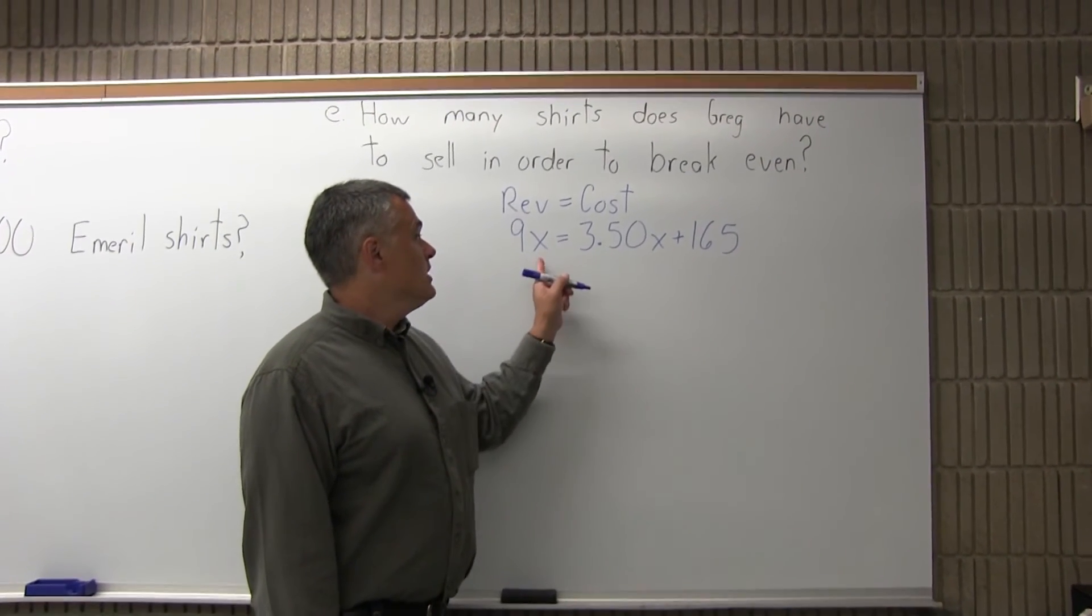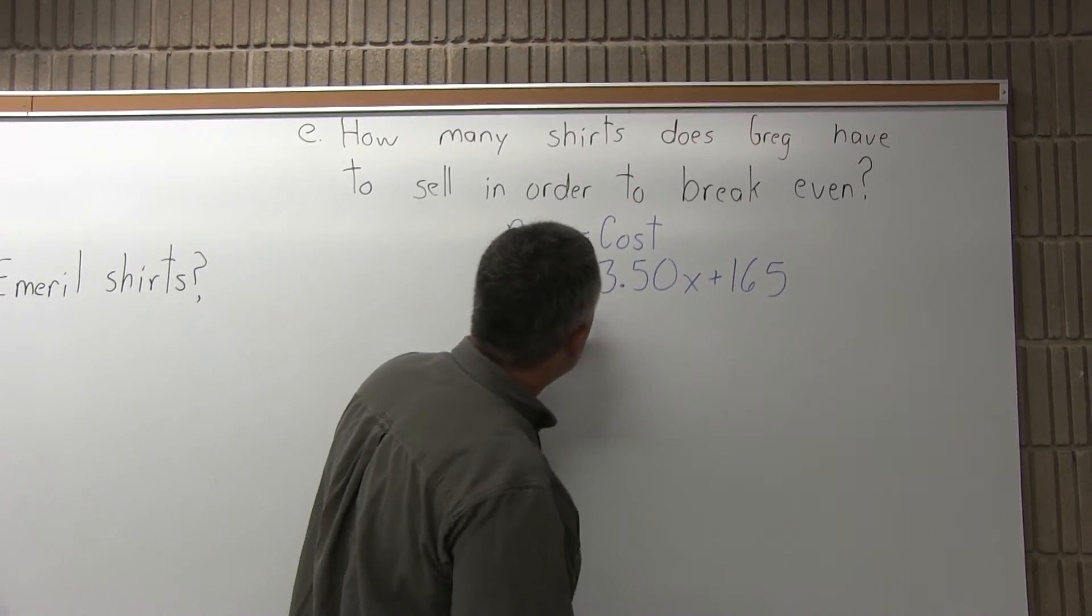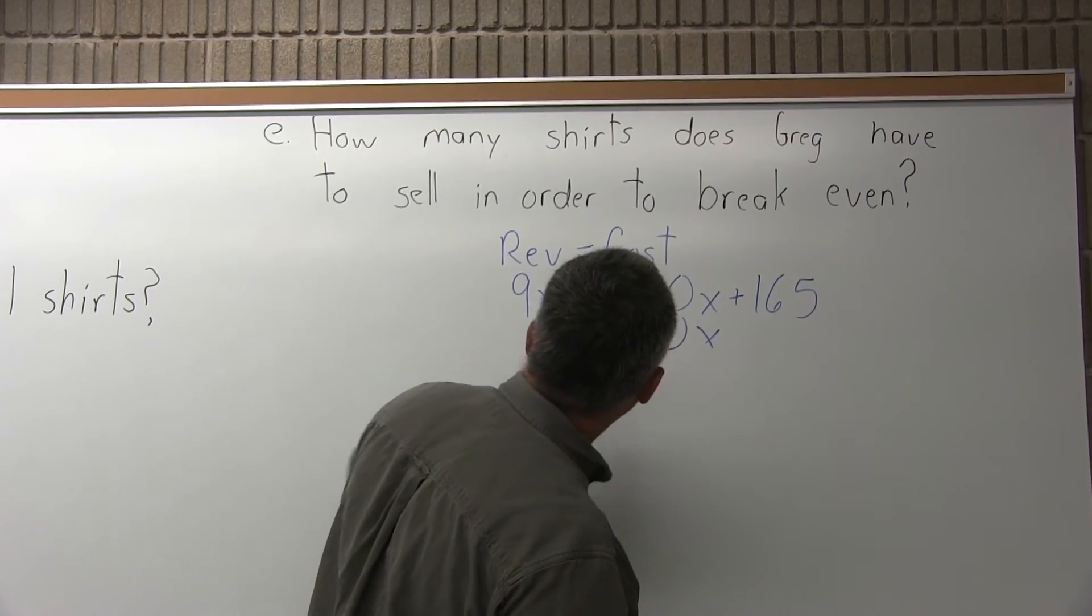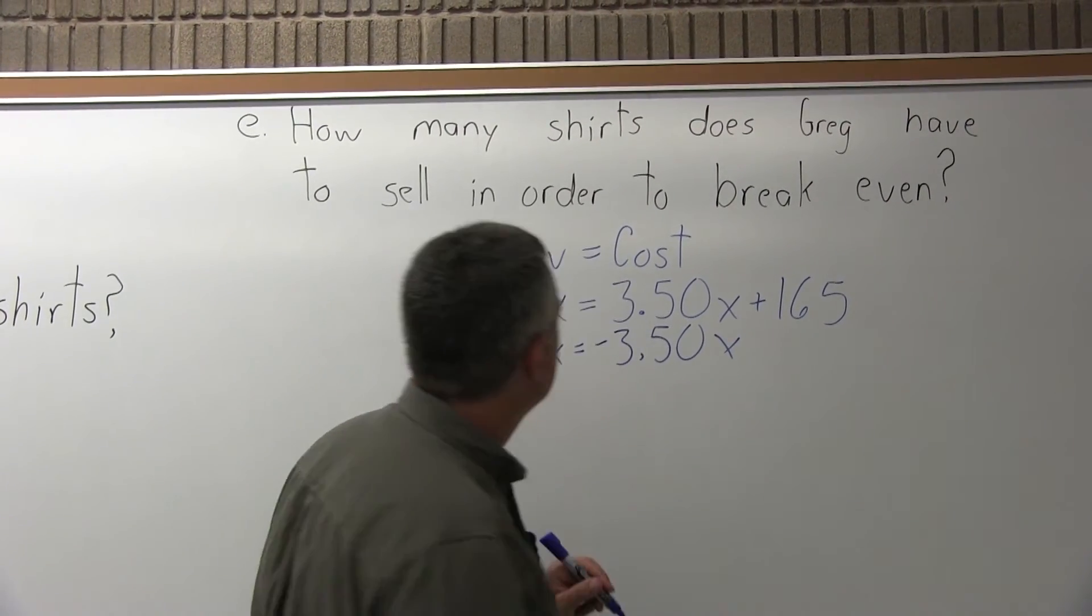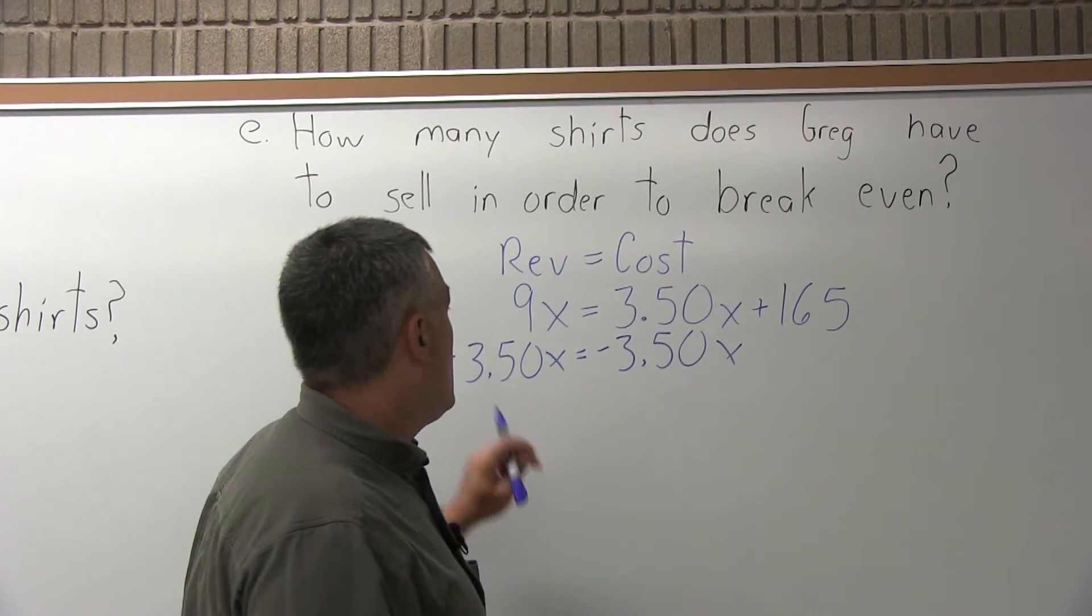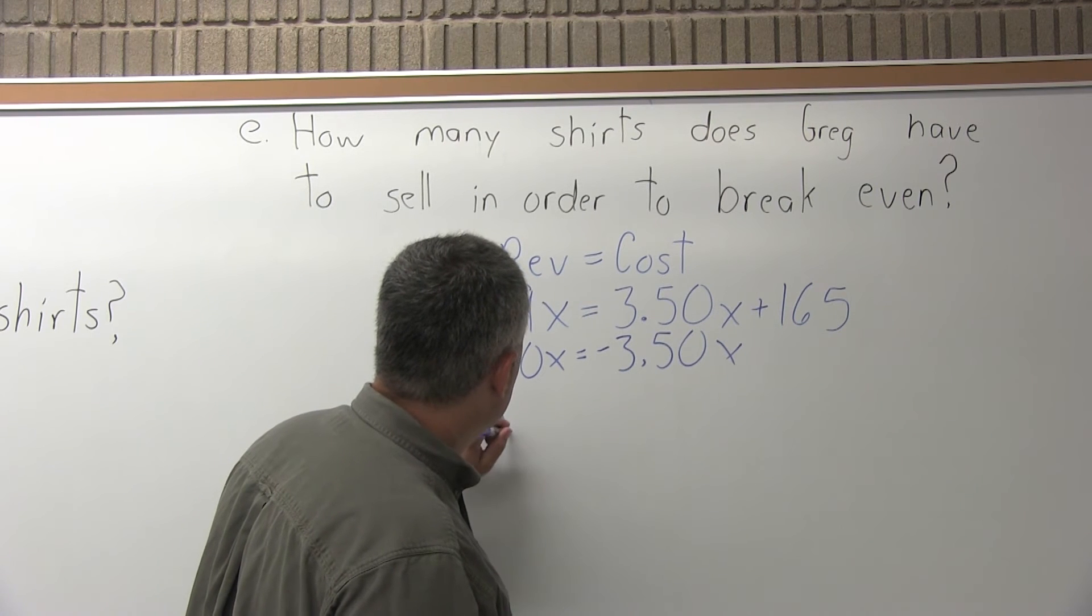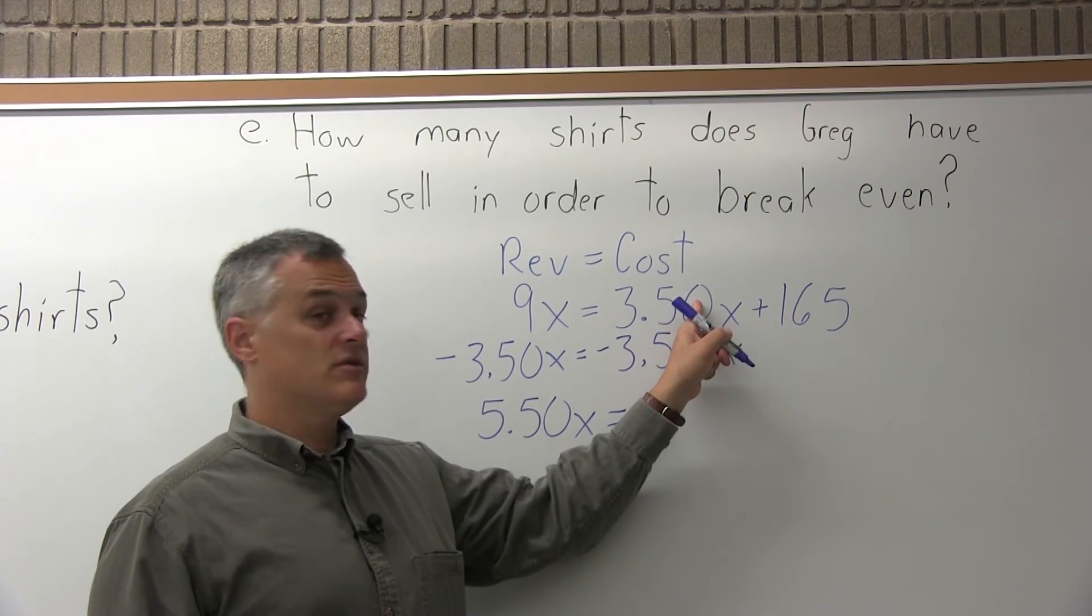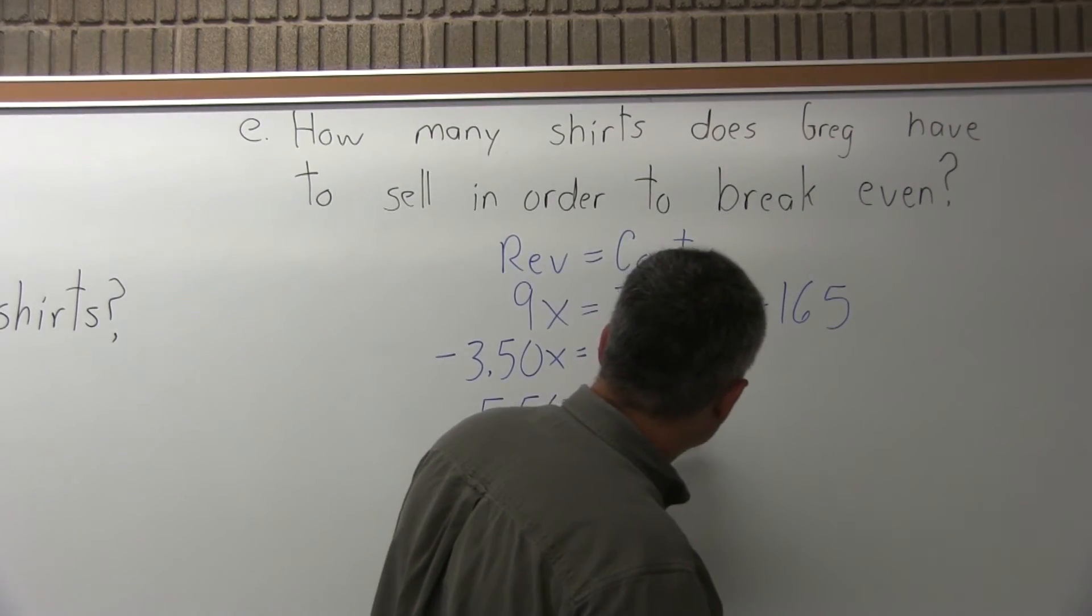So now to solve that, what we want to do is solve for X. You have an equation with one variable. Let's get the X's on one side. So, I'd like to cancel the 3.50X on the right side and make it show up on the left side. So I'll go minus 3.50X on each side. On the left, 9X minus 3.50X is 5.50X equals, on the right, the positive 3.50X and the negative 3.50X cancel. And I have 165.